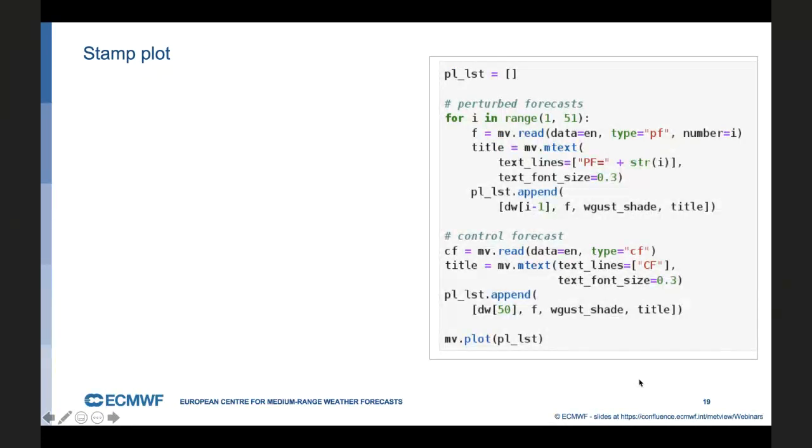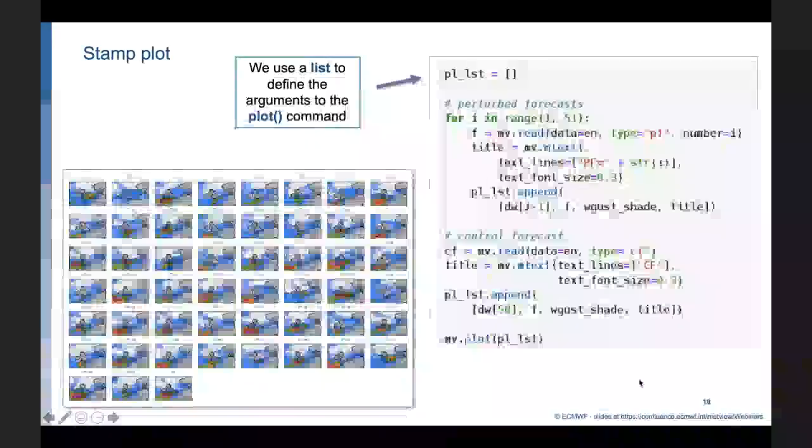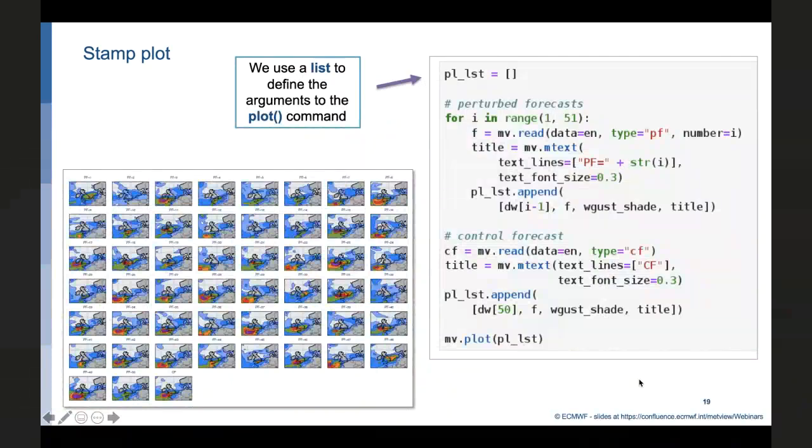Because now we have to deal with a lot of fields, a lot of graphical objects with the plot command to manage it, we use a list for this task. So we define a Python list to collect all the arguments. Then we have a loop for all the perturbed forecast members from 1 to 50. In the loop, we read the perturbed forecast to the fieldset. We define a title for it. And we append all the necessary plotting objects to the list. We repeat this for the control forecast as well. And in the end, the plot command is very simple, because we just need to pass the list into it as an argument. And that's the plot we generated. It shows that there is indeed a variation in the location and the intensity of the storm in the forecast.